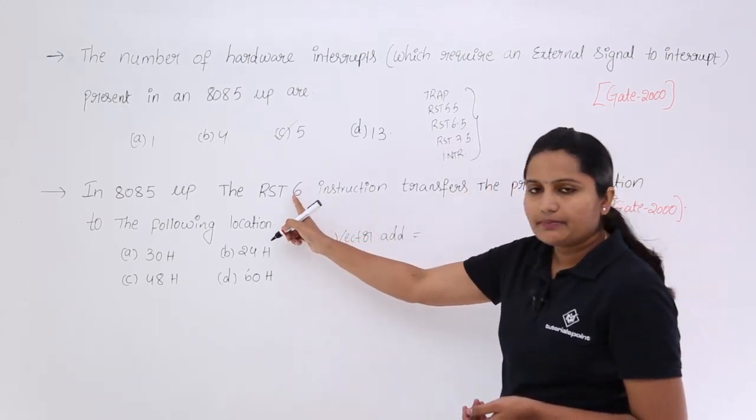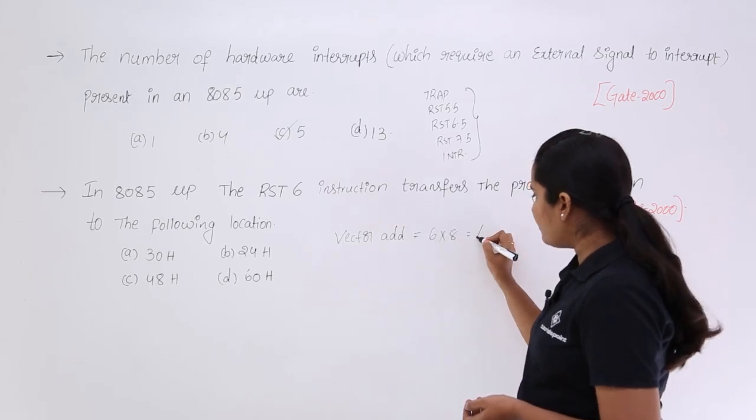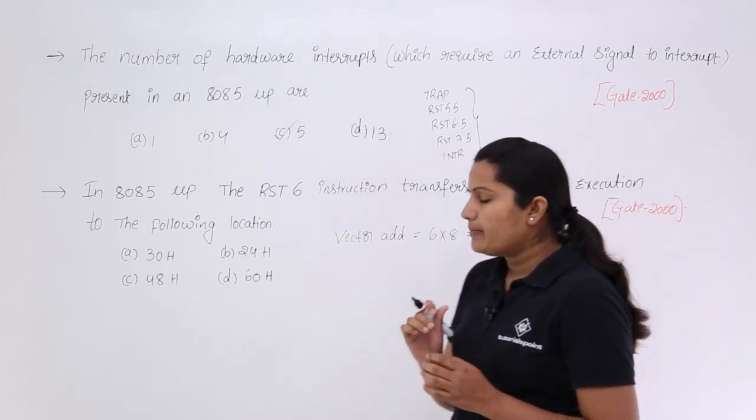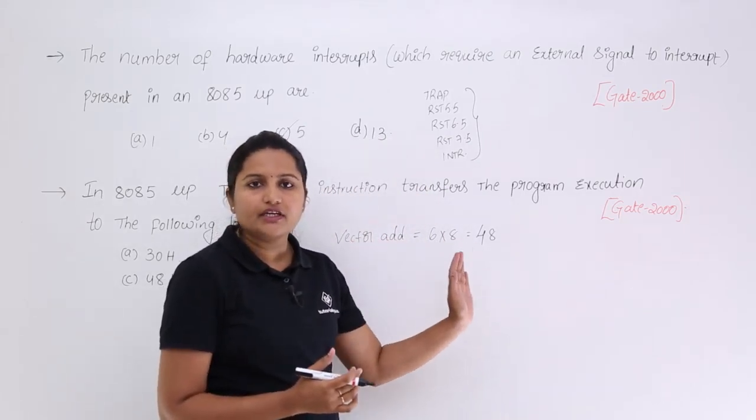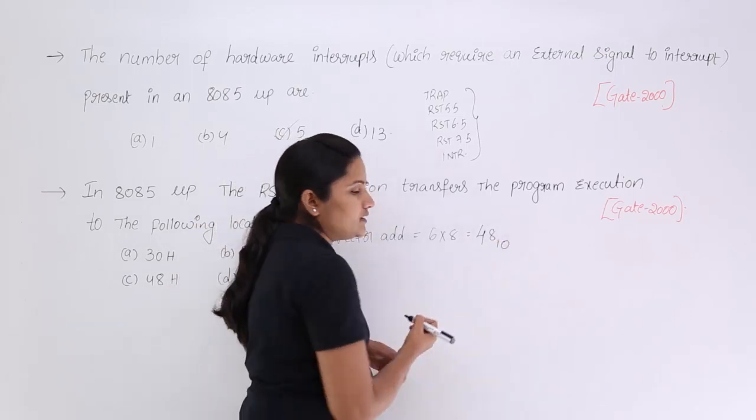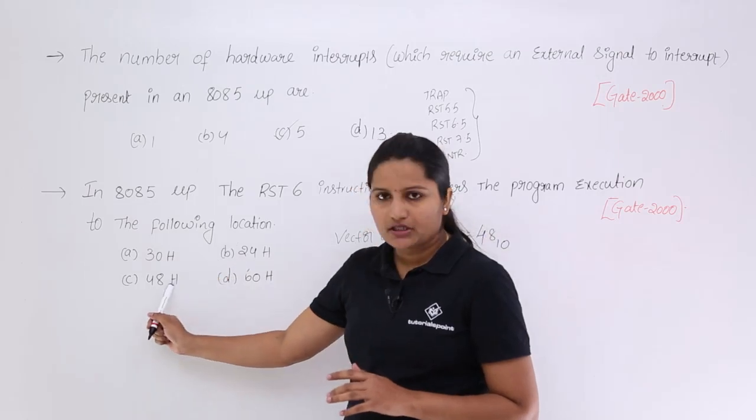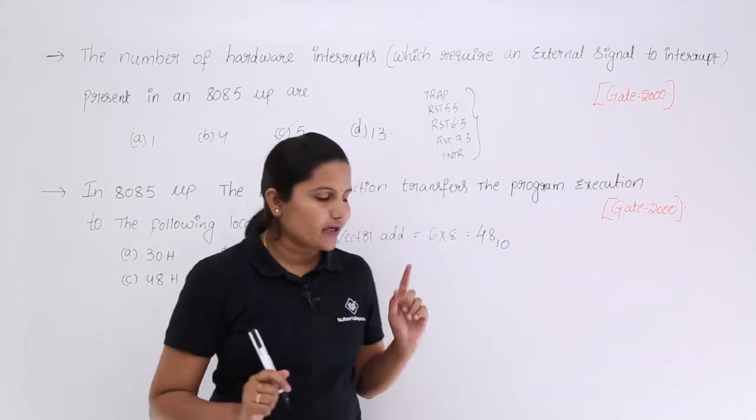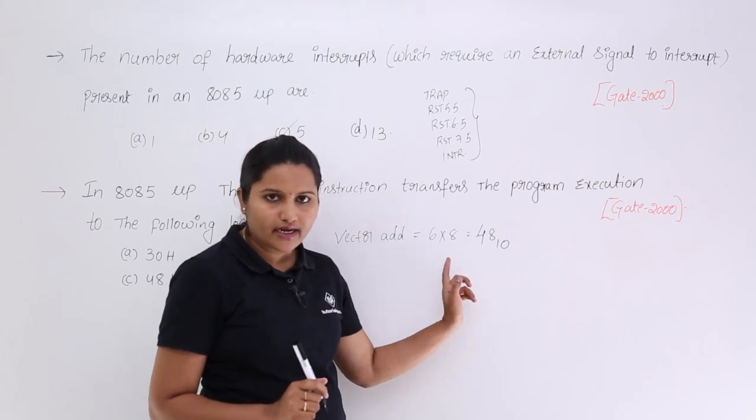Here we need to multiply this 6 with respect to 8. This is equivalent to 48. But this 48 will be in decimal. Decimal we need to convert into hexadecimal. Whatever we are getting here that is in decimal but they given in terms of hexadecimal. Do not go for this option. Actually whatever we are getting for vector address by multiplying 6 into 8.